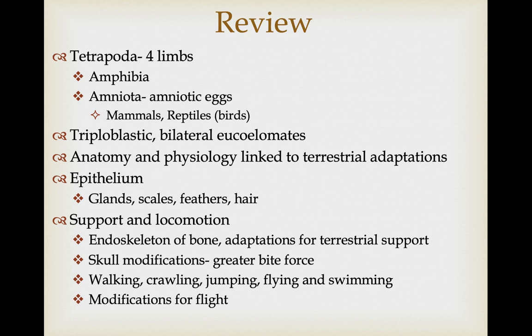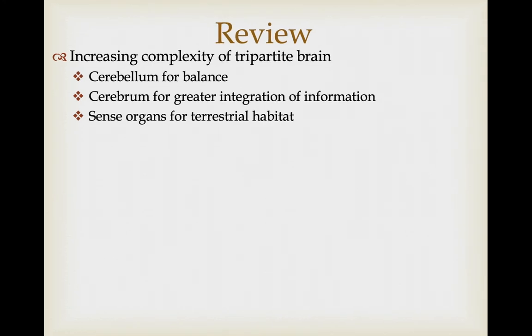There is a general increasing complexity of the tripartite brain in subsequent tetrapod lineages — a much larger cerebellum for the challenges of balance in the terrestrial environment, a greater cerebrum for integration of sensory information and greater cognitive abilities seen particularly in birds and mammals. Make sure you understand what sense organs tetrapods have and how these have been modified for better functionality in the terrestrial habitat compared to the aquatic habitat.